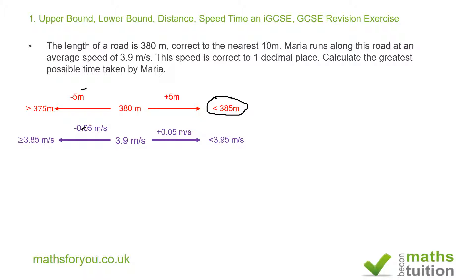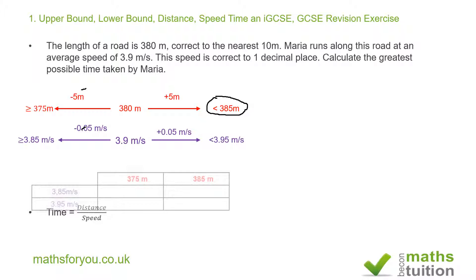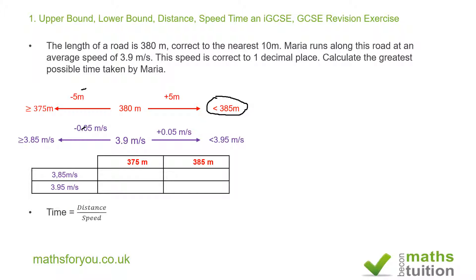These are our extreme values. To find time, we divide distance by speed, so I now create a table listing all the extreme values for distance and speed.